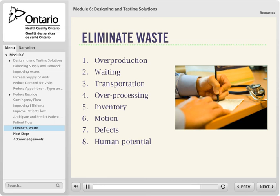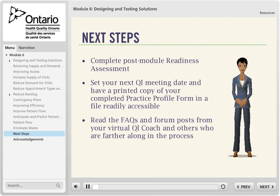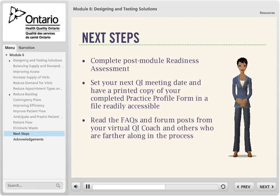Use the checklist in the practice assessment tool to help your team track your quality improvement efforts and be very clear as a team about what strategies and activities you will undertake to achieve advanced access and improved efficiencies. If you've met as a team and completed this module, you've done a lot of the heavy lifting. Understanding what can be achieved and determining how you will approach your advanced access and efficiency strategies to balance supply and demand is important to moving on to Module 7, which will guide you through completing a PDSA cycle to test whether the strategies you've chosen are effective. Completing the quick post-module readiness assessment will help ensure you are ready to move on.